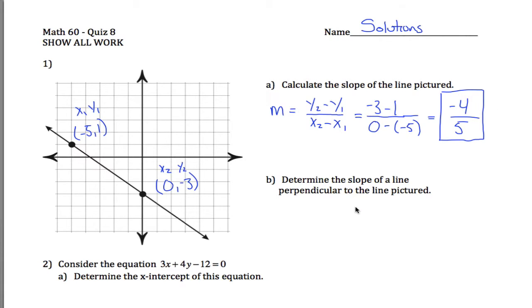Determine the slope of a line perpendicular to the line pictured. What you need to know for that is that if a line is perpendicular, its slope is the negative reciprocal. So what I mean is, up here the slope is negative 4 fifths. The negative of negative 4 fifths would be positive 4 fifths, but I don't just want the negative of the slope, I want the negative reciprocal.